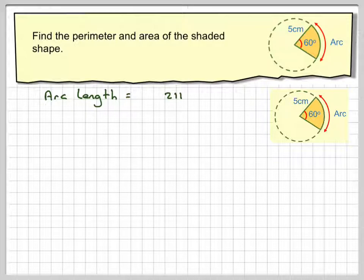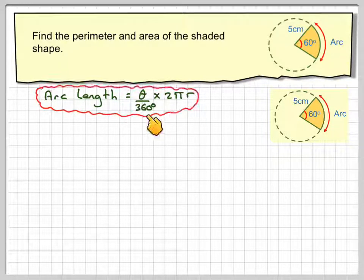So the arc length is 2 pi r, which is the circumference of the circle, and you want a fraction of that. So it's going to be the angle, which we call theta, over 360 degrees. So that's a fraction.